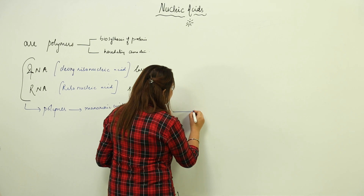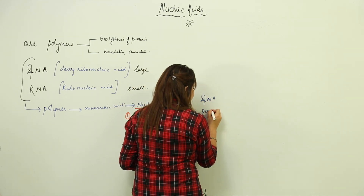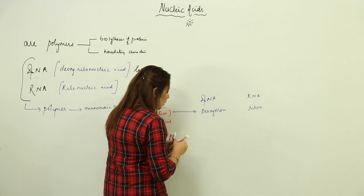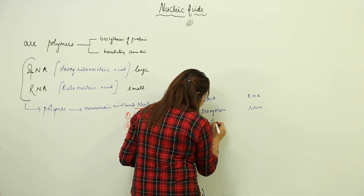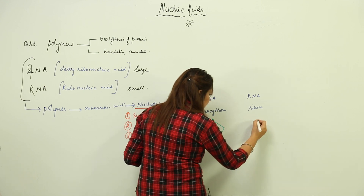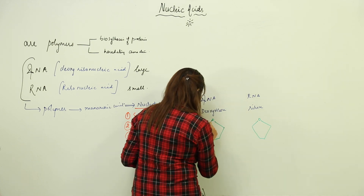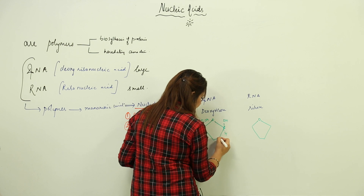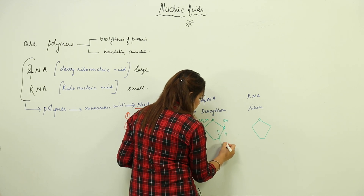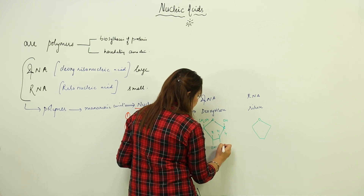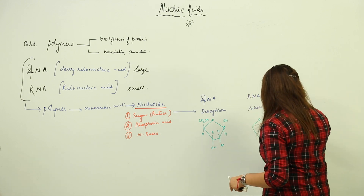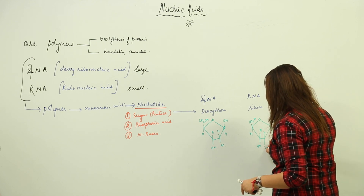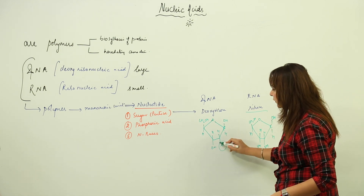If we talk about the sugar, the sugar present in DNA is deoxyribose and the sugar present in RNA is ribose. Their structures are similar five-carbon ring structures, with the key difference being that deoxyribose is missing an oxygen group (OH) at the 2' position that ribose has.